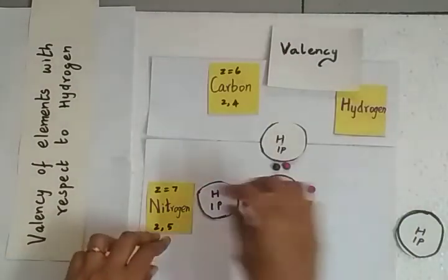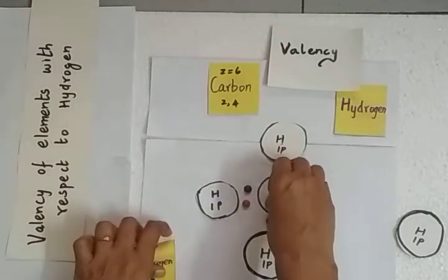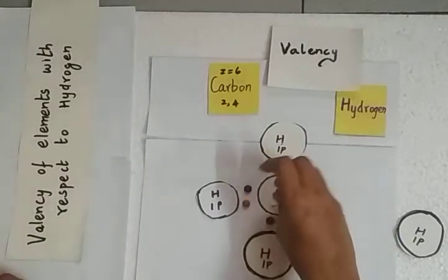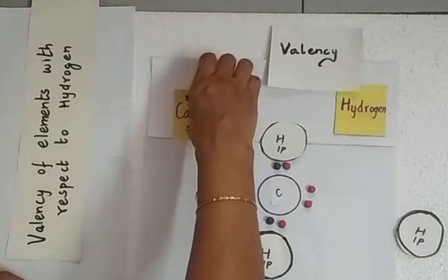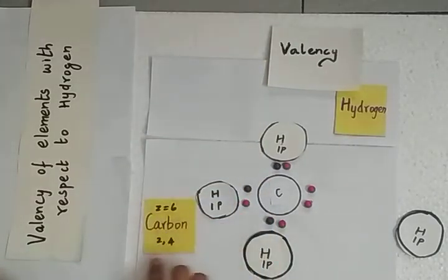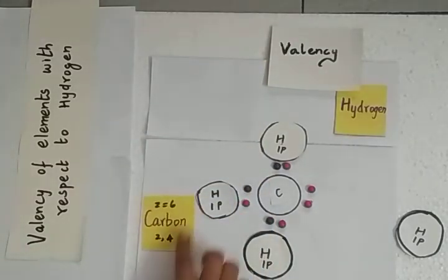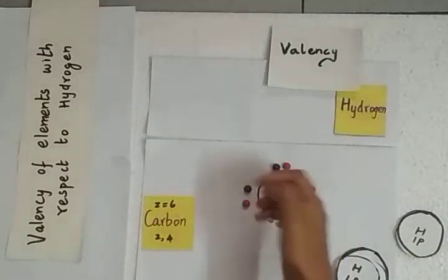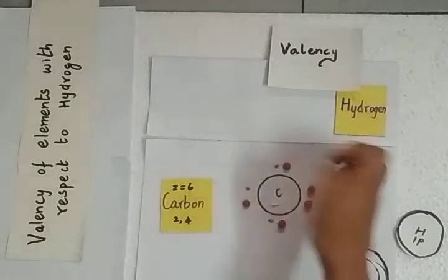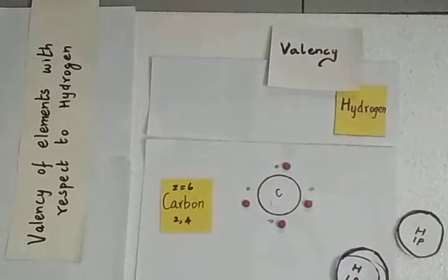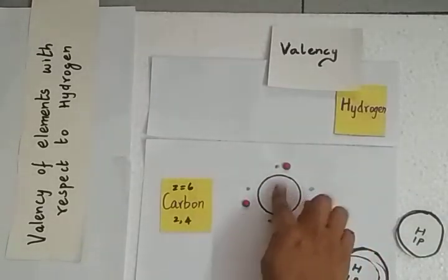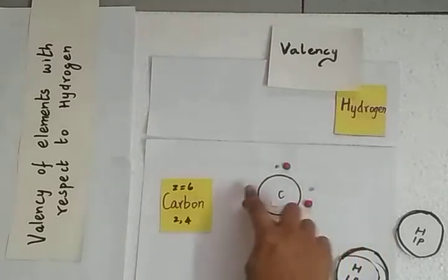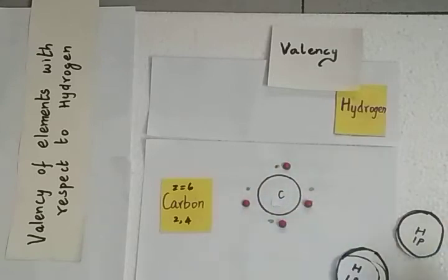The next example is carbon, with the symbol C. Carbon has an atomic number of 6, with 2 electrons in the K shell and 4 in the L shell — giving it 4 valence electrons, already represented with red beads. Carbon needs 4 more electrons to complete its octet configuration.